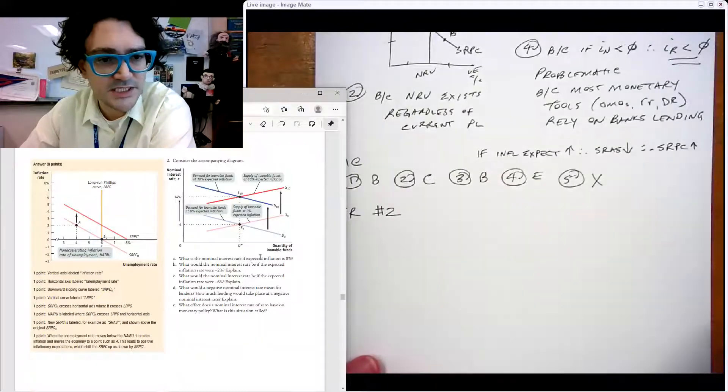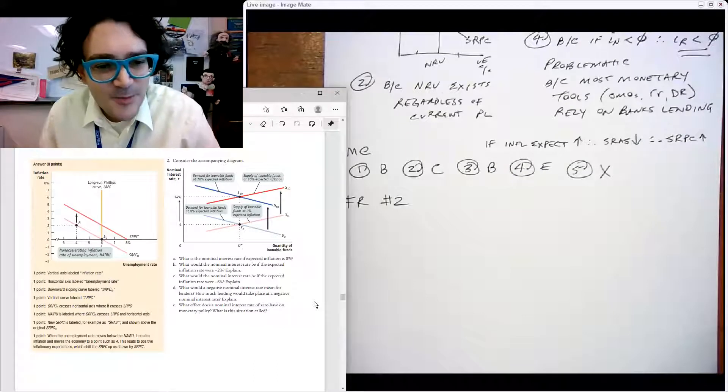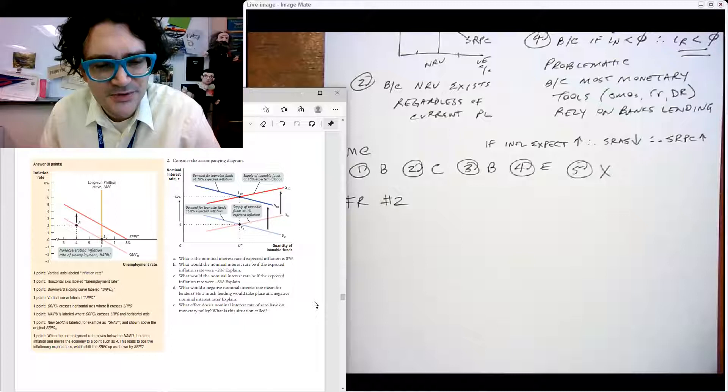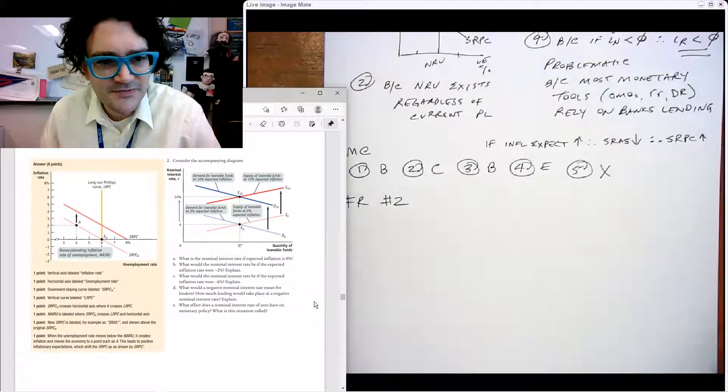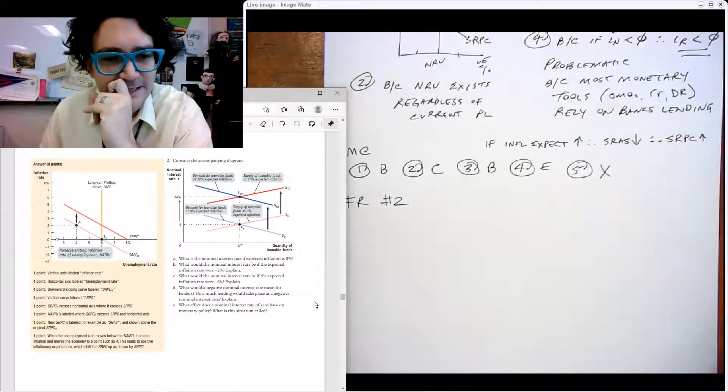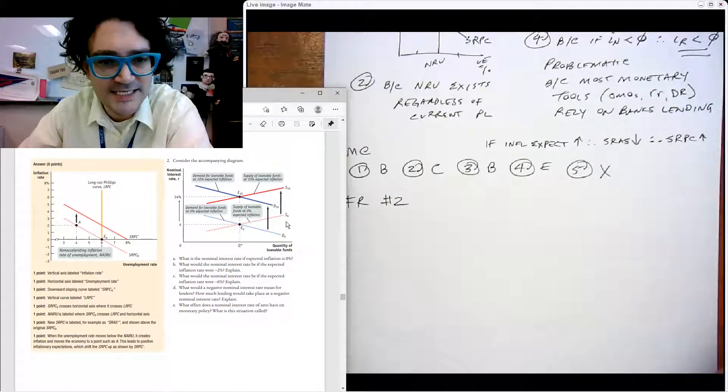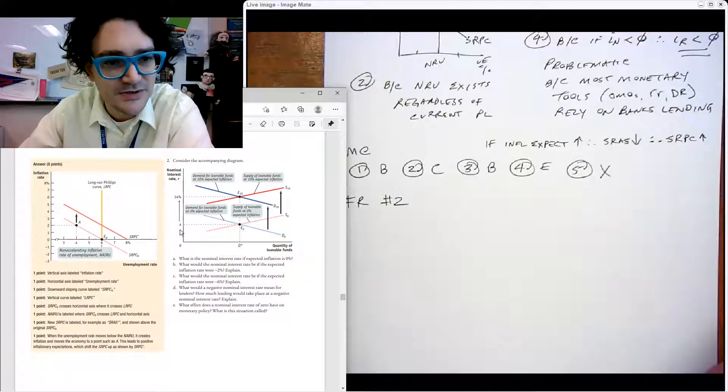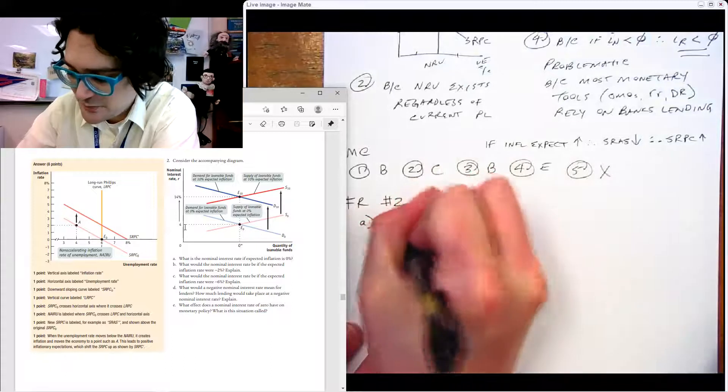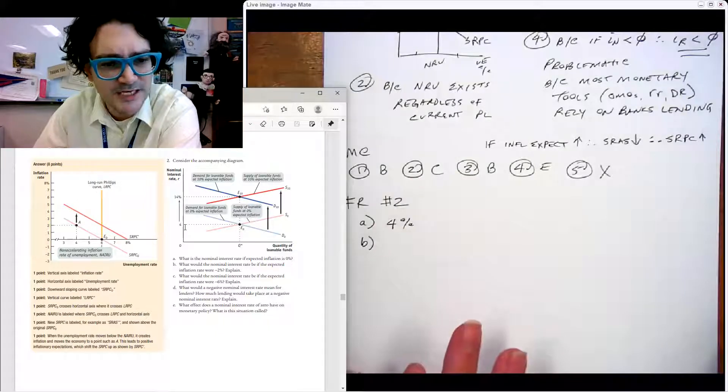Let's take a look at free response number two. Look at that diagram, look at all those lines on that thing. What is the nominal interest rate if expected inflation is zero? Okay, supply at zero, demand at zero, this is loanable funds but it should be the real interest rate. I think I'm reading this correctly, it's taking me a second here. If the expected inflation is zero, the nominal interest rate is four. I'm just reading the graph. S zero, D zero, so that occurs at E zero, so four percent.